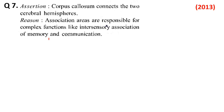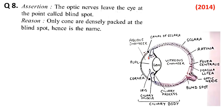Question number 8, 2014 में पूछा हुआ है। Assertion: The optic nerve leaves the eye at the point called blind spot — बिल्कुल सही है। Optic nerve blind spot से बाहर निकलती है। Reason: Only cones are densely packed at the blind spot, hence the name — नहीं, यहाँ cone ऐसा कुछ नहीं। Blind spot पर कोई भी photoreceptor, चाहे rod हो या cone, नहीं होता। इसीलिए वहाँ कोई image नहीं बनता। तो reason गलत है, assertion सही है। Option C।